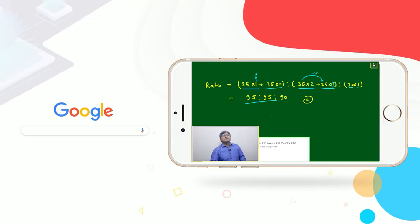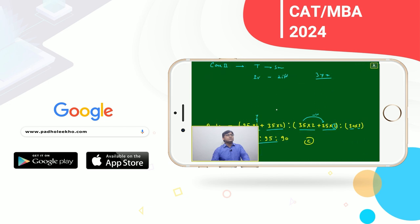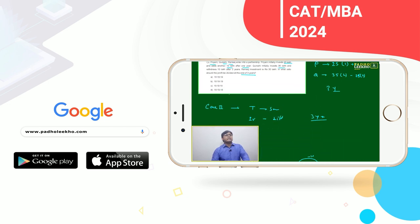The calculation gives us a ratio of 95:95:90. Taking the common factor out, dividing by 5, we get 19:19:18 as the final answer.